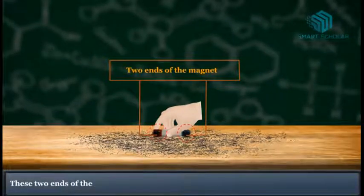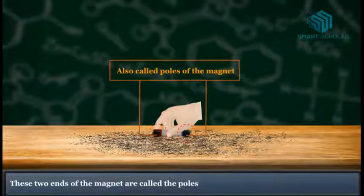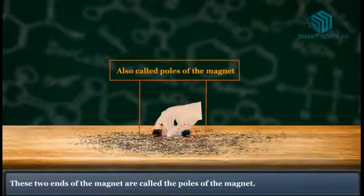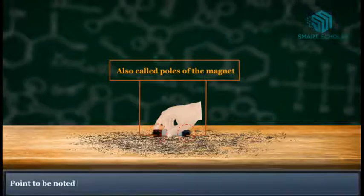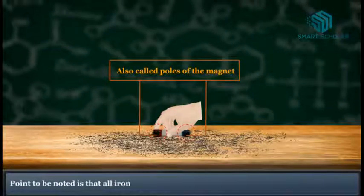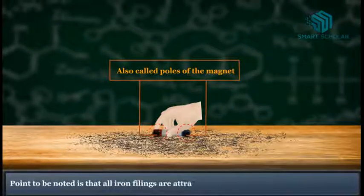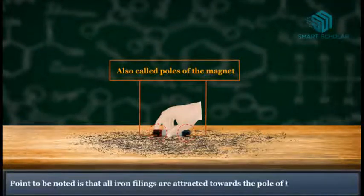These two ends of the bar magnet are called poles of the magnet. Point to be noted is that all iron fillings are attracted towards the poles of the magnet.